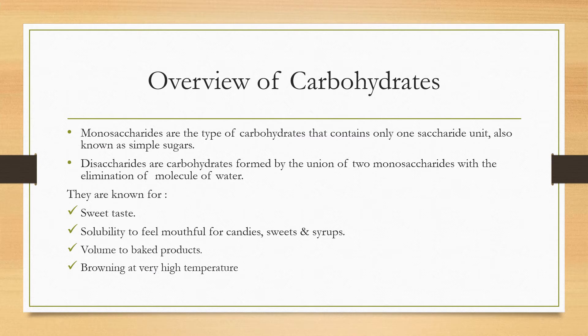What are mono and disaccharides? We all know that these two are types of carbohydrates. Mono means one — it contains only one saccharide unit — while disaccharides are made up of monosaccharides and may contain two or more saccharide units. Their qualities include sweet taste, solubility useful in making candies, syrups and sweets, providing mouthfeel, and serving as a basic ingredient in baked products that gives volume and browns at high temperatures.